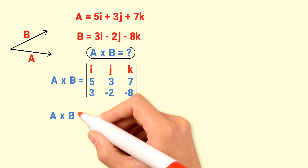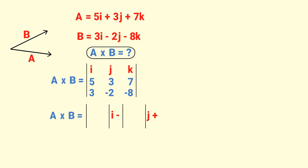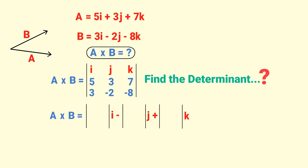The next step is: A cross B equals the I component minus the J component plus the K component. We write empty matrices for I, J, and K components. We need to find the determinant of this 2 by 3 matrix — doing so will fill in the components of the I, J, and K unit vectors.